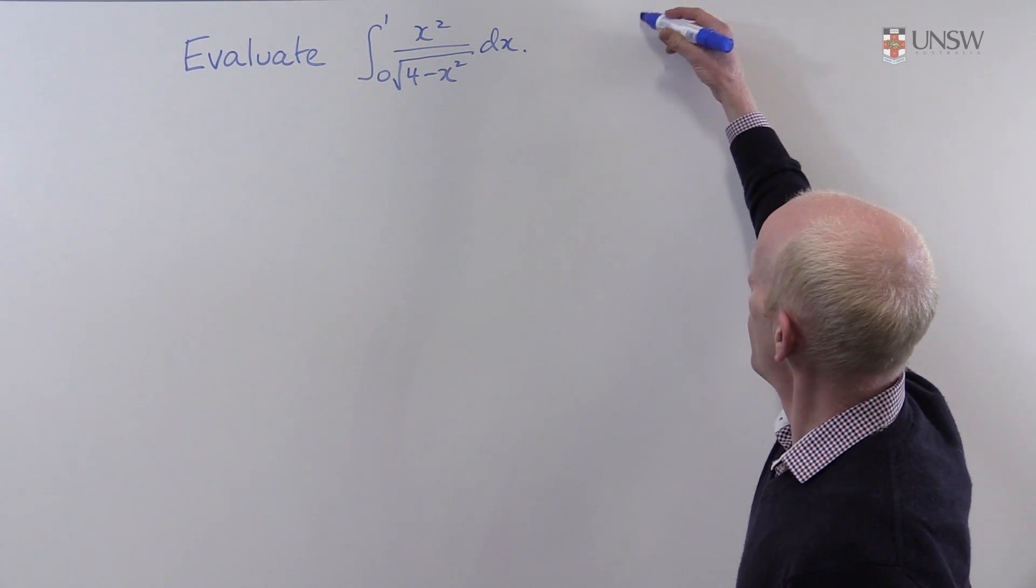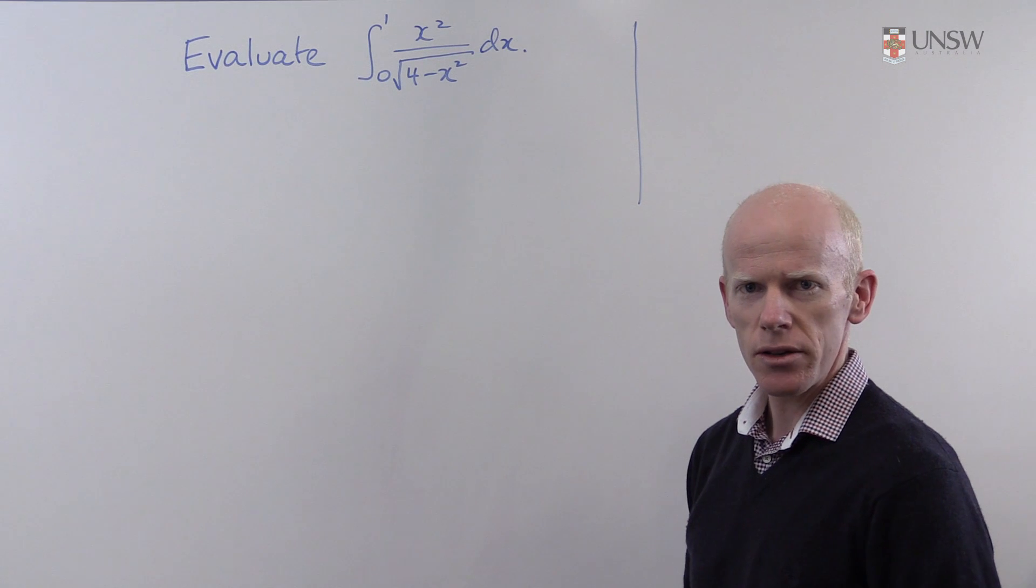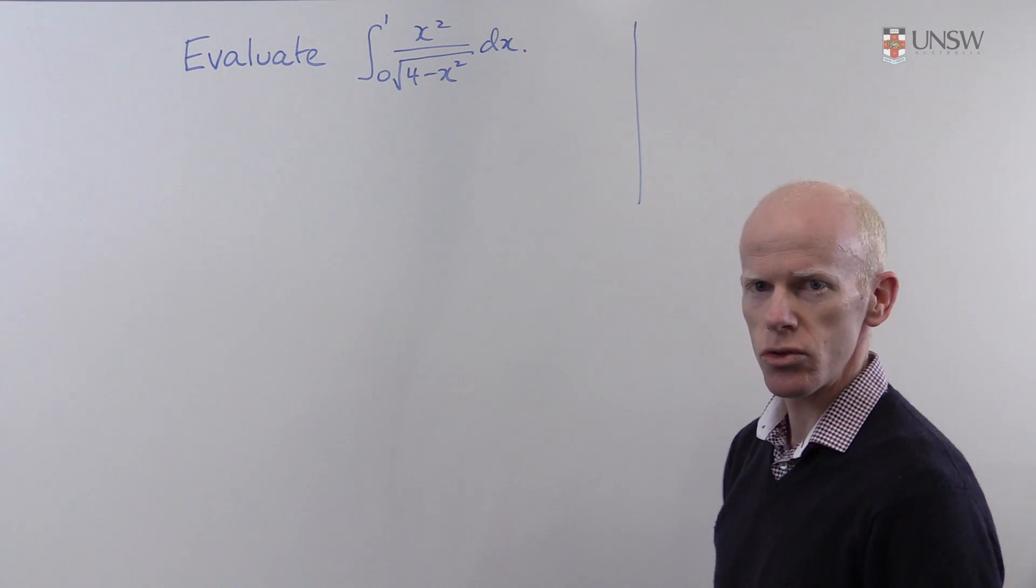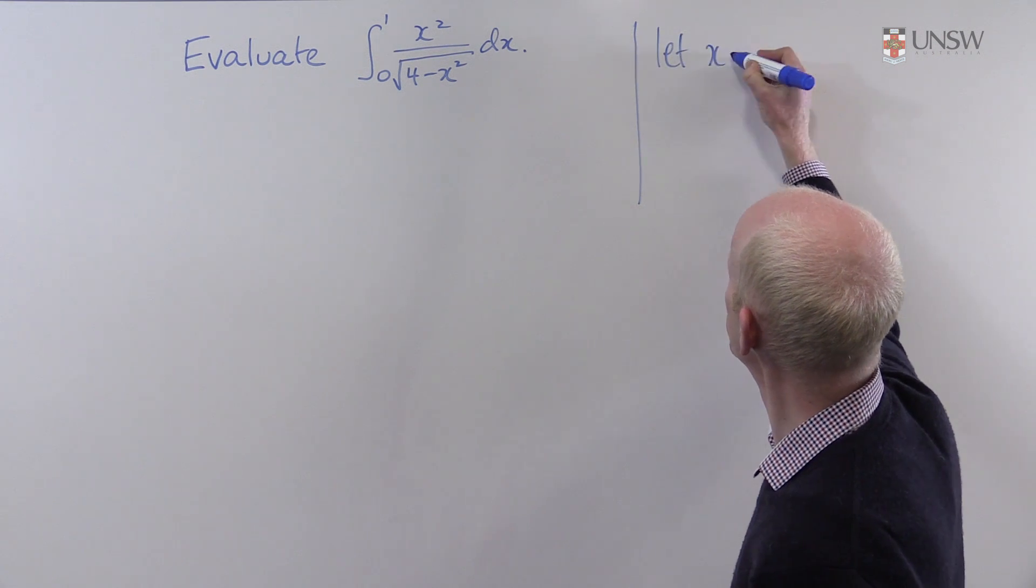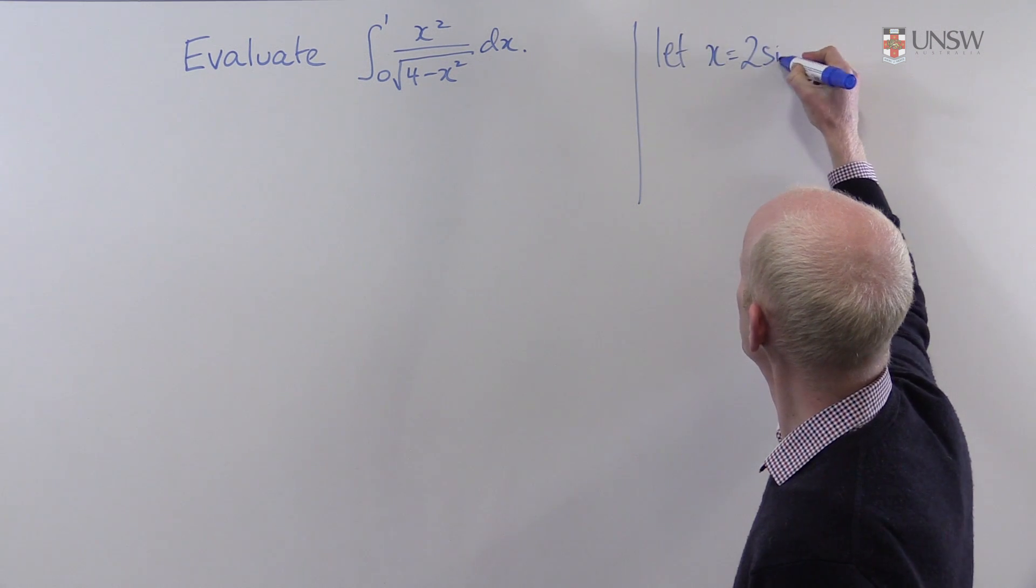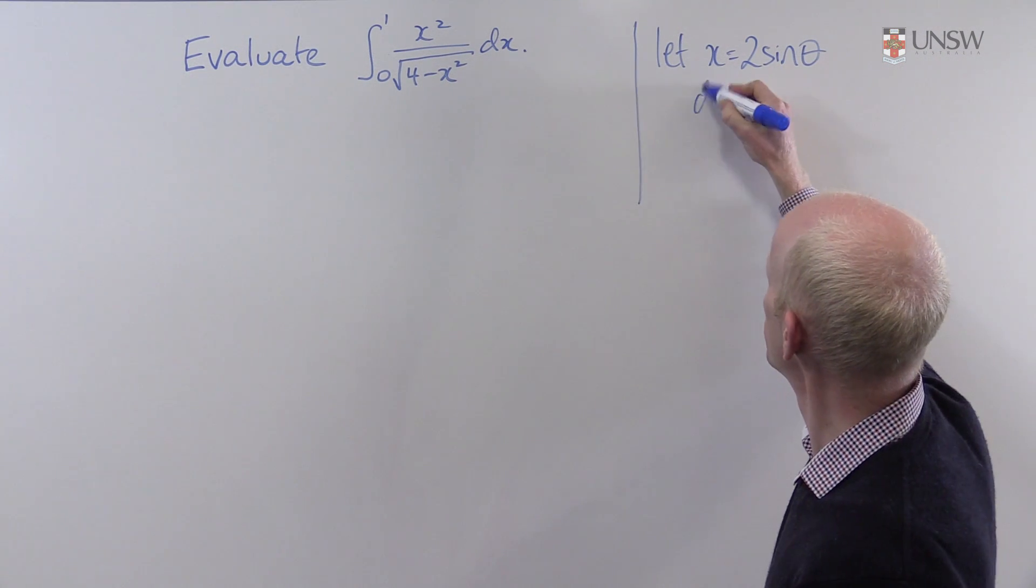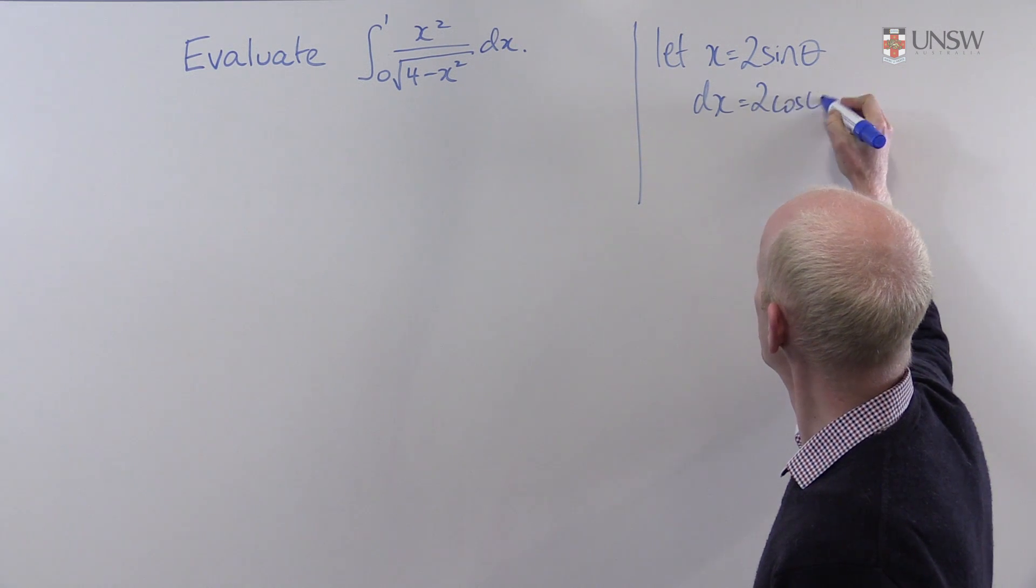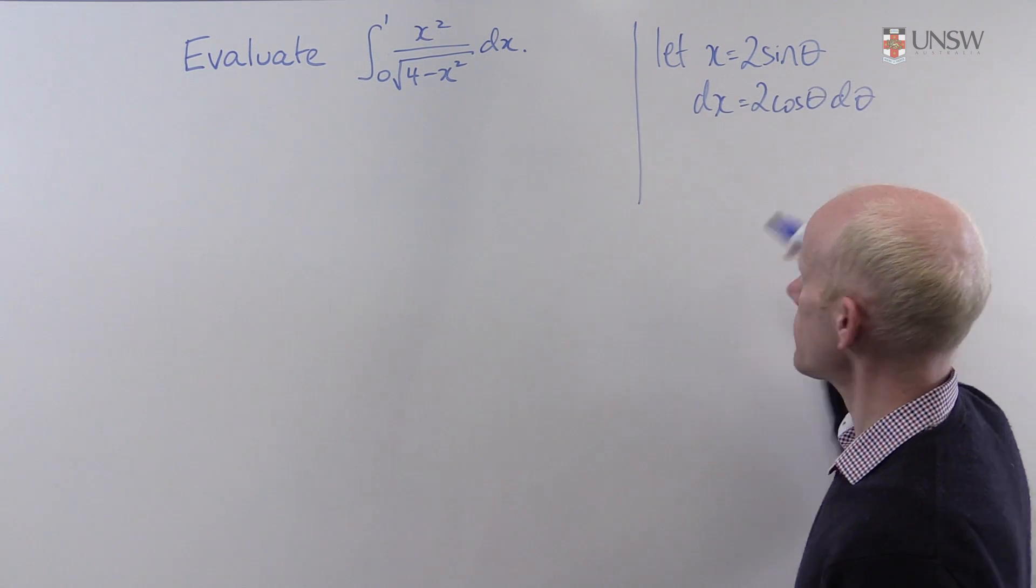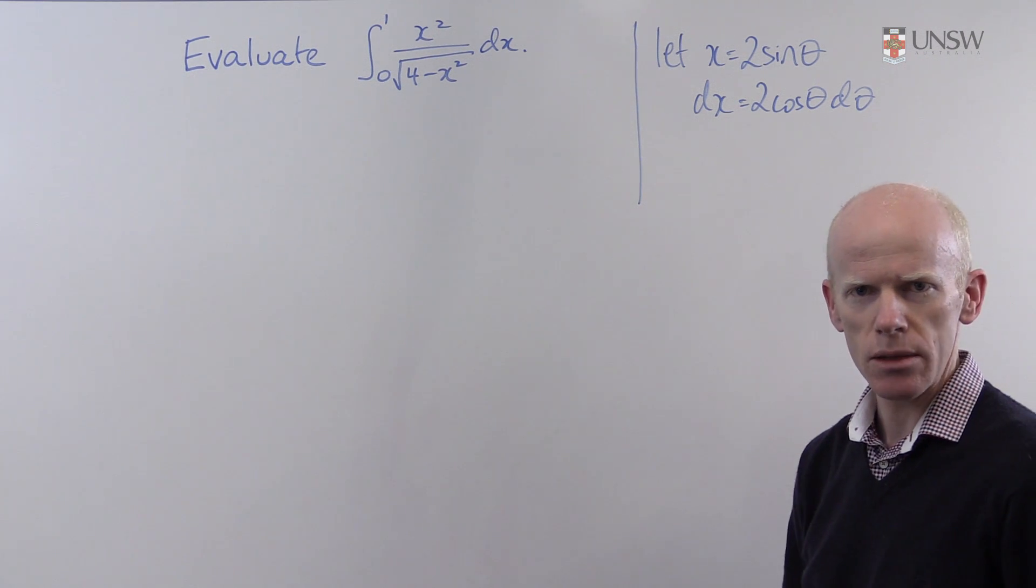I'm going to make this substitution: let x equal 2 sin θ. Calculate the derivative, and because this is a definite integral, I need to change the limits of integration.